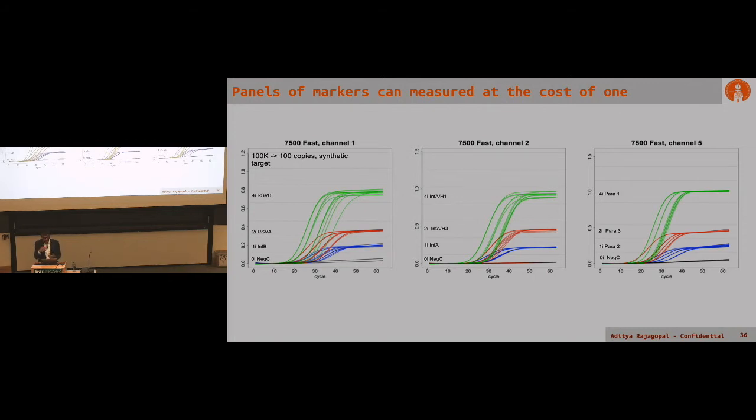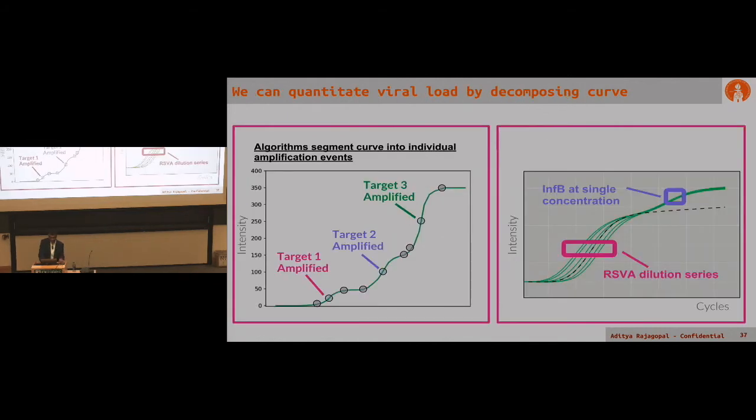This was a phenomenal lever for us because we could take equipment that had already been installed in labs and enable them to measure things they couldn't measure before. You can not only get out target identities if you're looking at things like viral panels, but you can also decompose the curve virtually into a set of eigencurves for each of these targets, which lets us look at concentrations of targets.